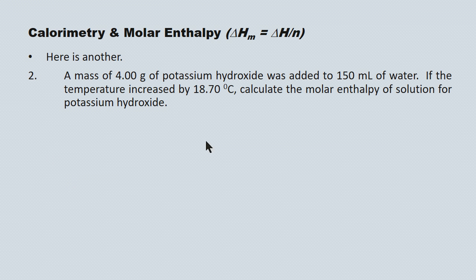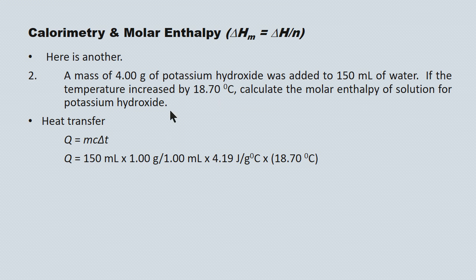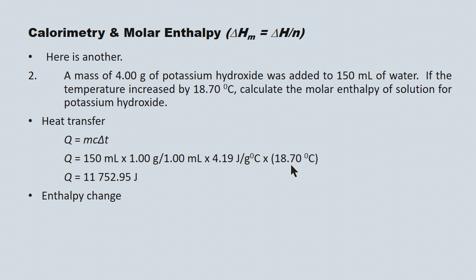Here's another example. This time we're dealing with potassium hydroxide rather than potassium chloride, and we observe an increase in the surrounding water of 18.70 degrees Celsius. The process is the same: Q equals MC delta T. Q equals mass of the water — 150 mL times the density conversion of 1 gram per mL — times the specific heat capacity of water, times the change in temperature. The enthalpy change for the potassium hydroxide is equal and opposite to the energy change of the water, so delta H equals negative Q, giving delta H equals negative 11,752.95 joules.